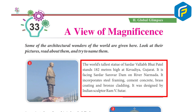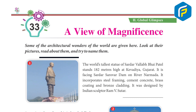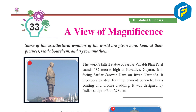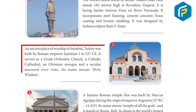It is facing Sardar Sarovar Dam on river Narmada. It incorporates steel framing, cement concrete, brass coating, and bronze cladding. It was designed by Indian sculptor Ram V. Sutar — the Statue of Unity.